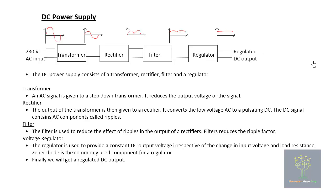The ripples will not be completely removed by the filter, so in order to remove the ripples completely we will be using a regulator. The regulator is basically a Zener diode, which produces a constant output voltage irrespective of the change in input voltage or the change in load. So the filter output will have small remaining ripples, and the regulator will produce a constant DC output.